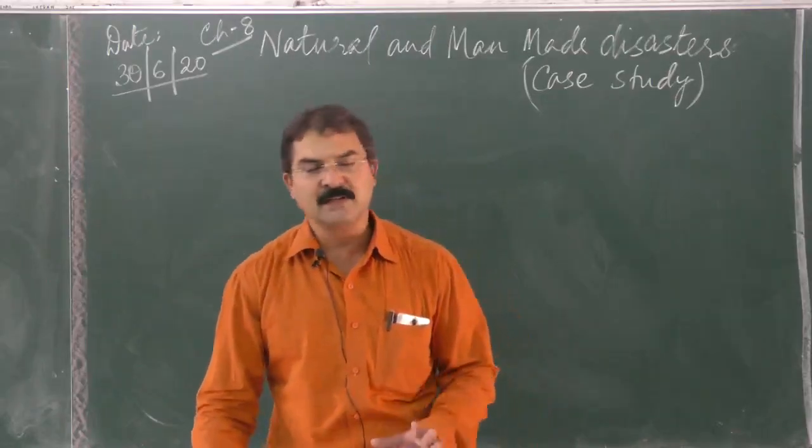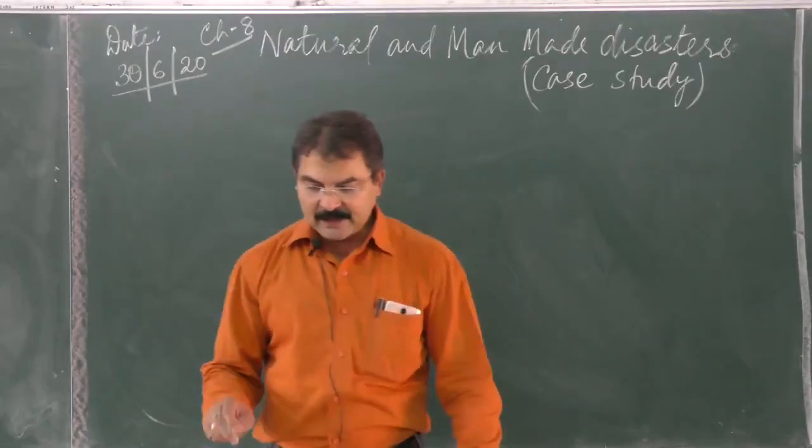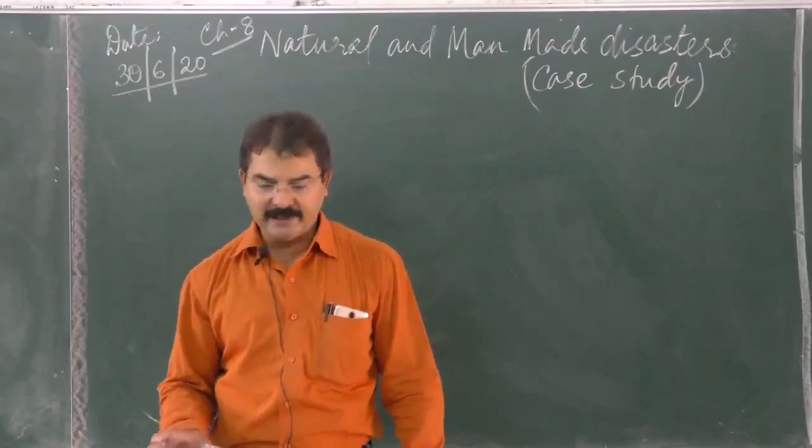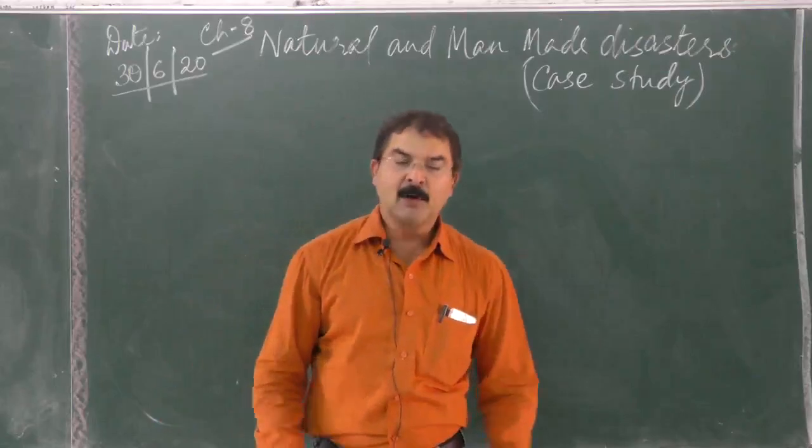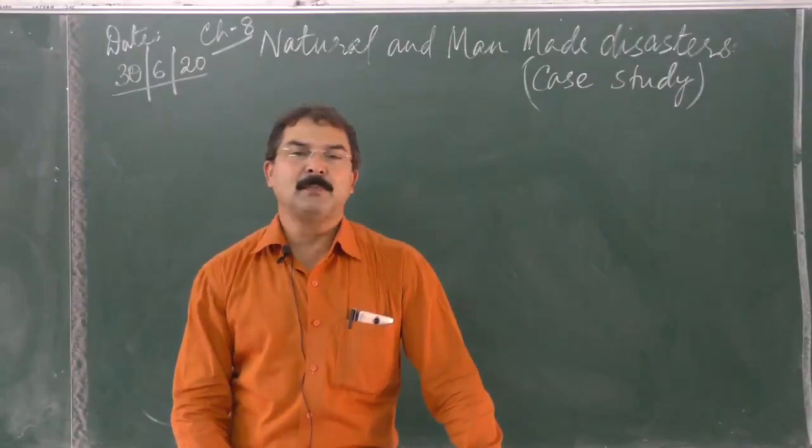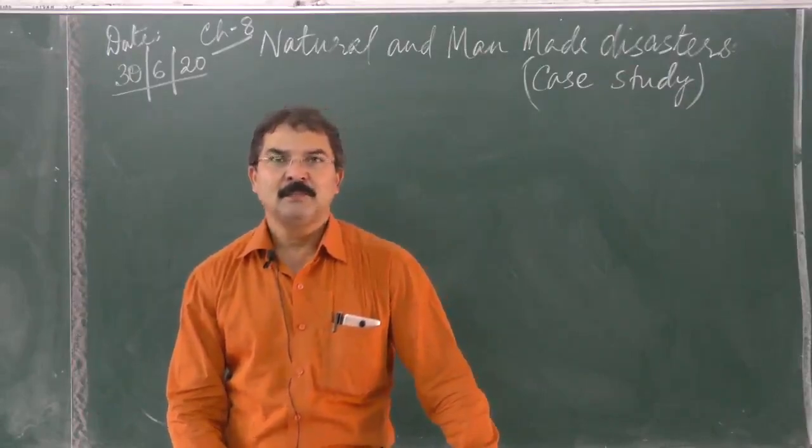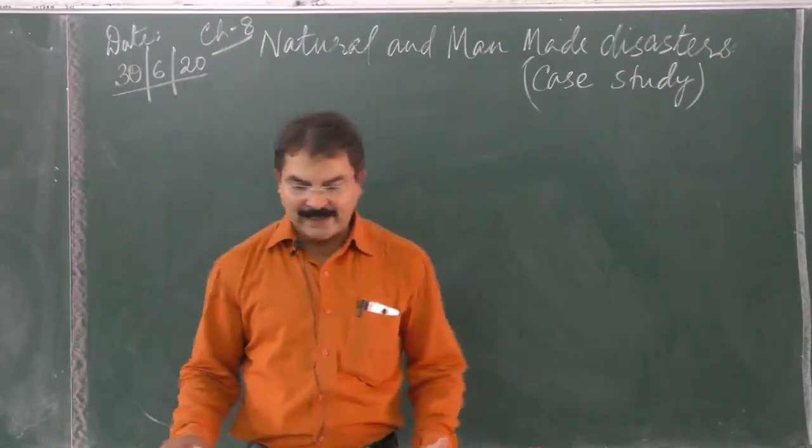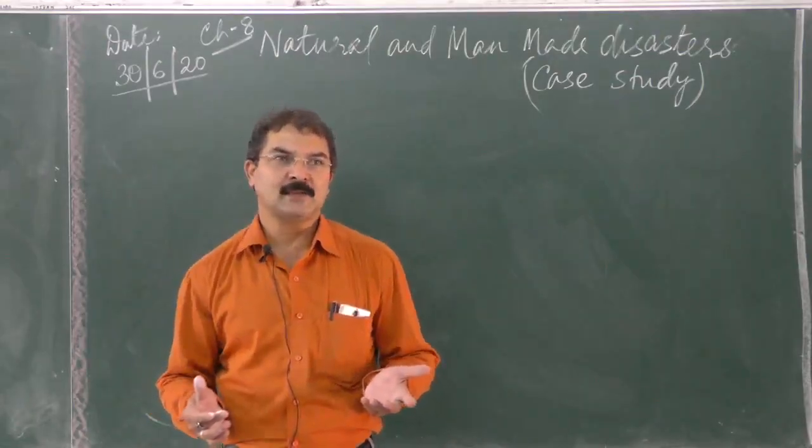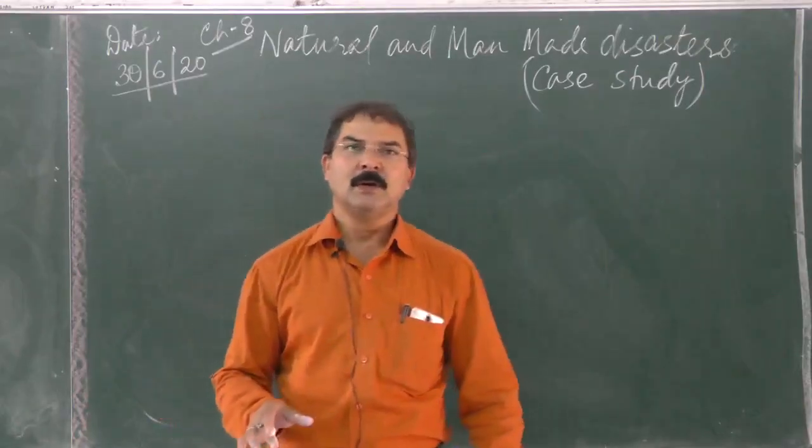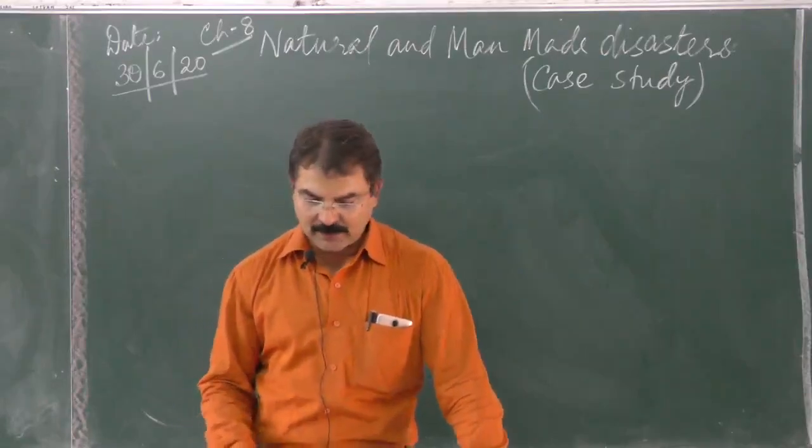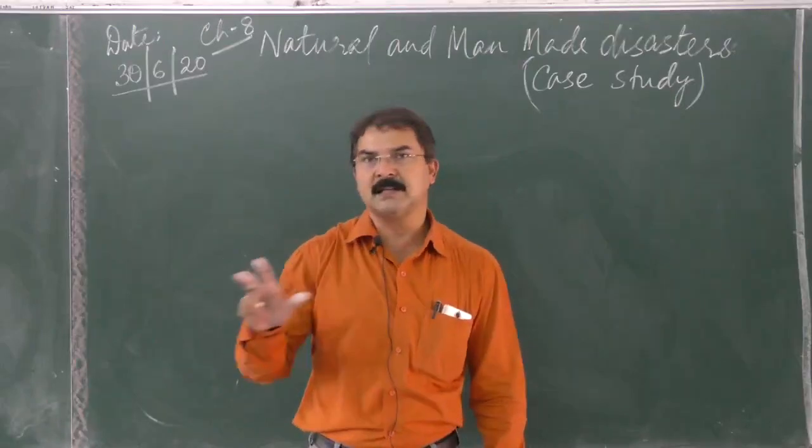Among major floods in Assam, the one which occurred in 2016 is considered the worst, because it affected nearly 1.8 million people. The Kaziranga National Park, famous for its single-horned rhinos, was totally submerged and more than 22 one-horned rhinos lost their lives. Thousands of people also lost their lives during this flood, making it one of the worst floods in recent times in Assam.